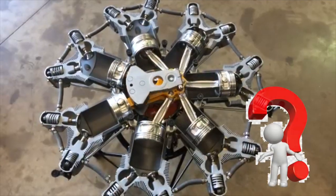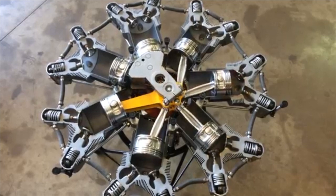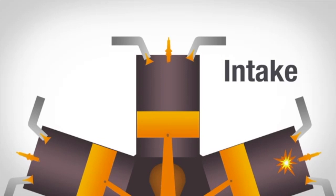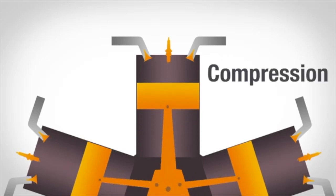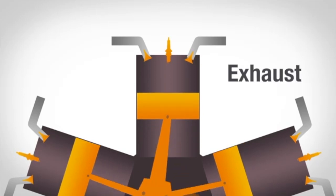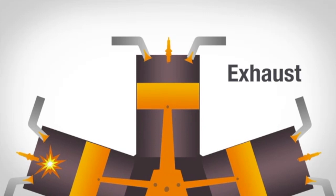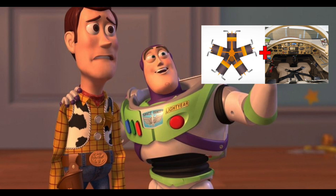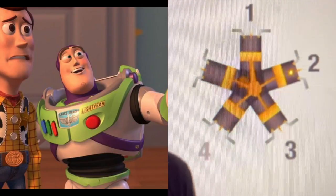Now, how does a radial engine work? Just like any reciprocating engine, it follows a four-stroke cycle. The first stroke is the intake stroke, where the downward-moving piston sucks the fuel-air mixture through the intake manifold and intake valve. As the piston moves up, it compresses the mixture on the compression stroke. Right before the piston hits the very top, the spark plug fires, igniting the fuel-air mixture, causing the gases to expand and forcing the piston back down on the power stroke. Then the crankshaft spins the piston back up, forcing out the burned fuel-air mixture on the exhaust stroke. Looking at a radial engine from behind or from the pilot's seat, the cylinders are numbered in clockwise order: one, two, three, four, five.